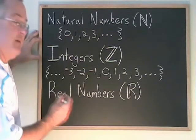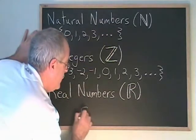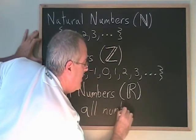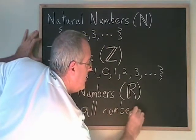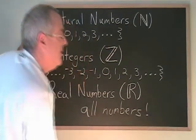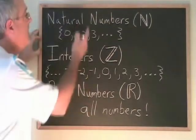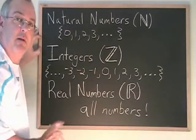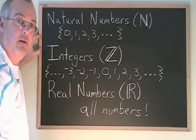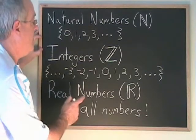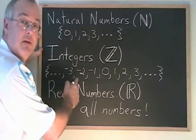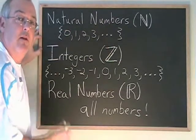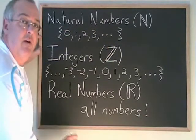Real numbers is all numbers. Real numbers includes the natural numbers and the integers — all the positive and negative whole numbers and 0 — but it also includes all the fractions and decimals that are located in between these whole numbers. Real numbers includes every other type of number.